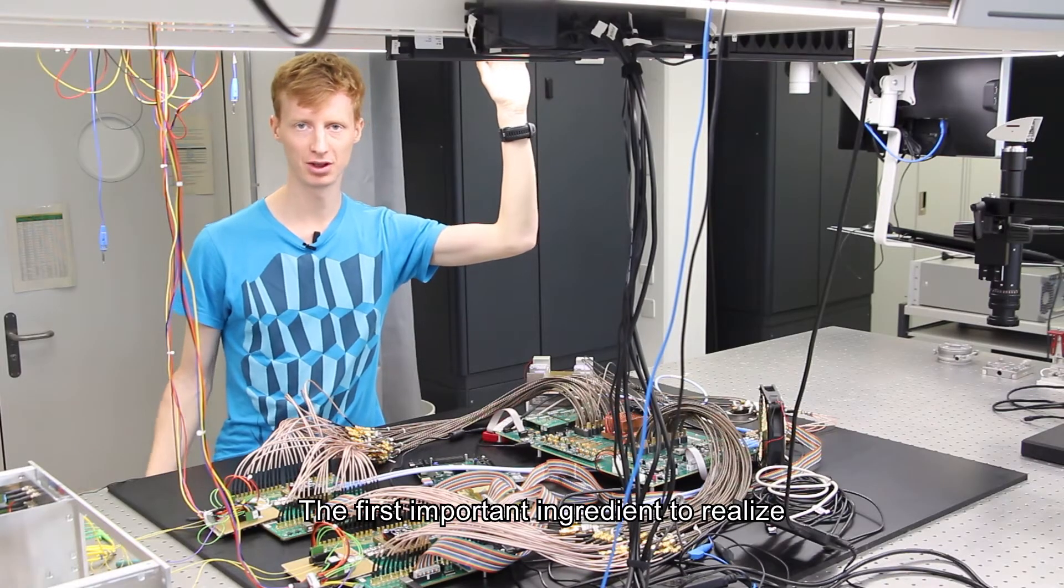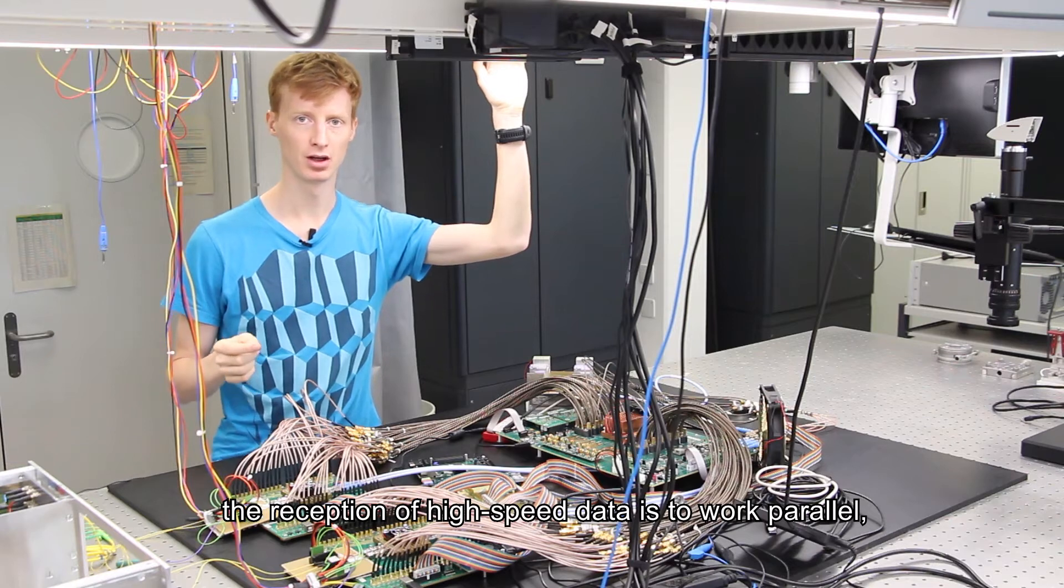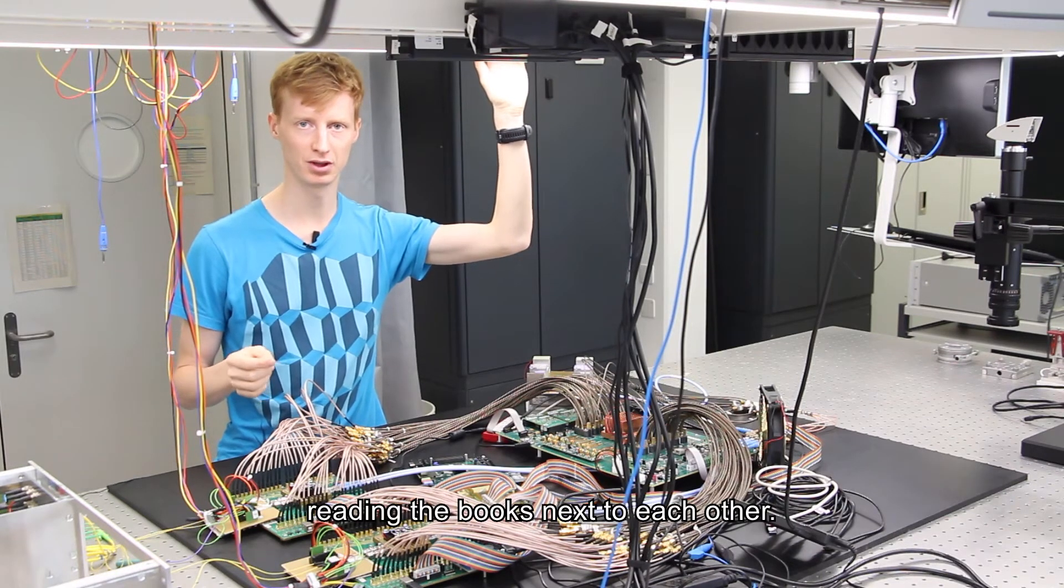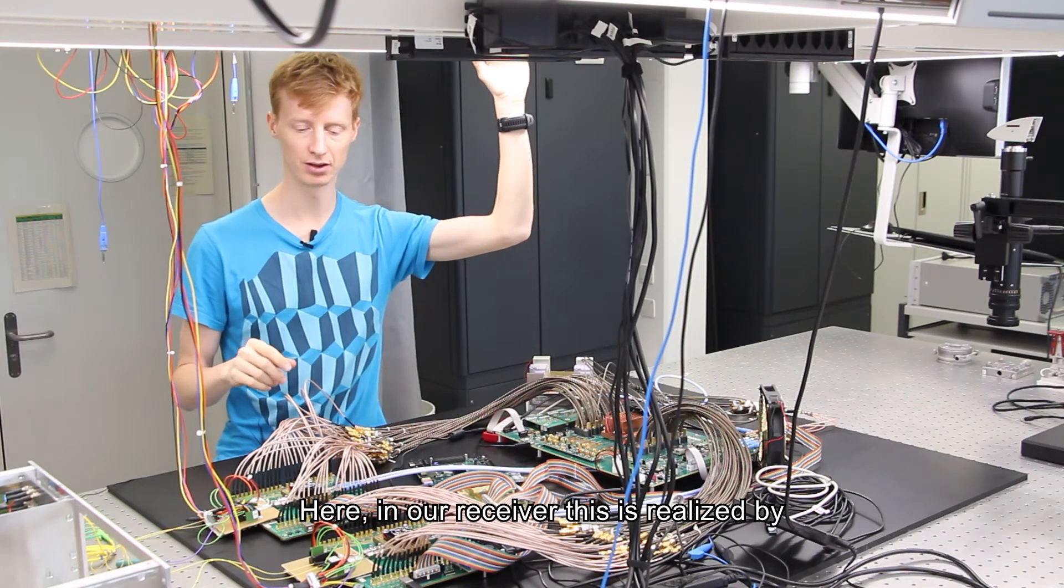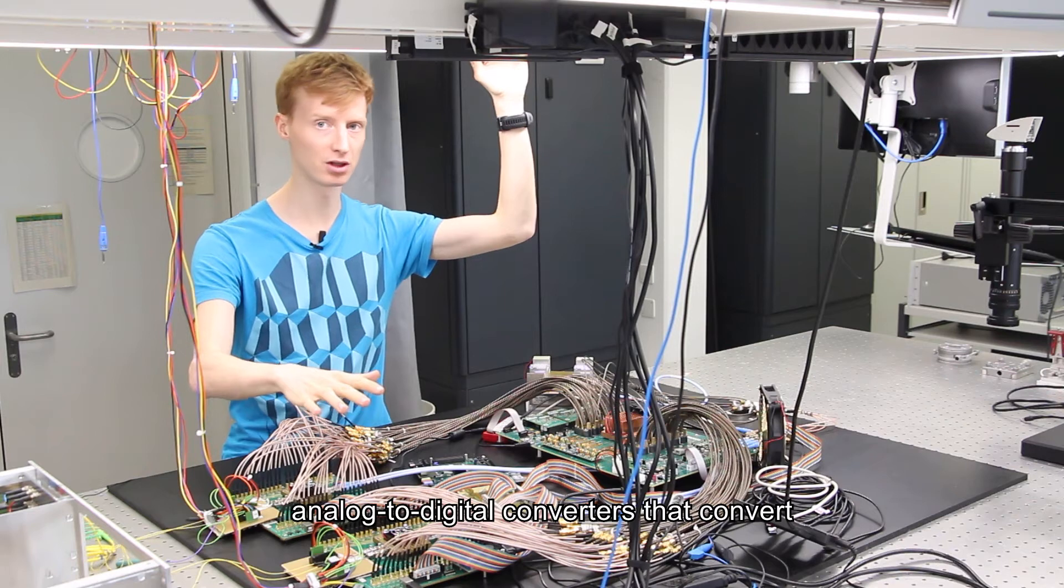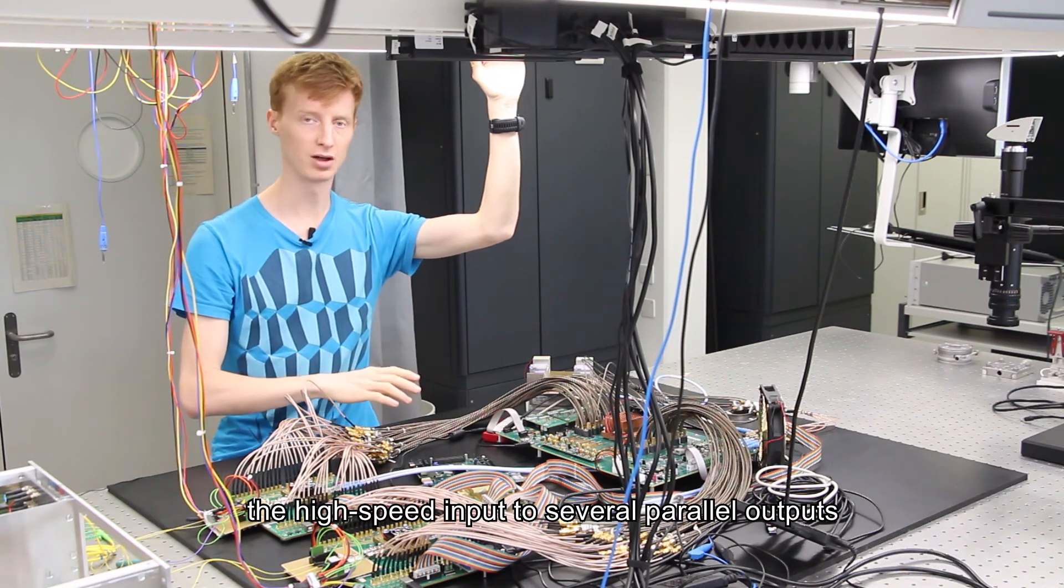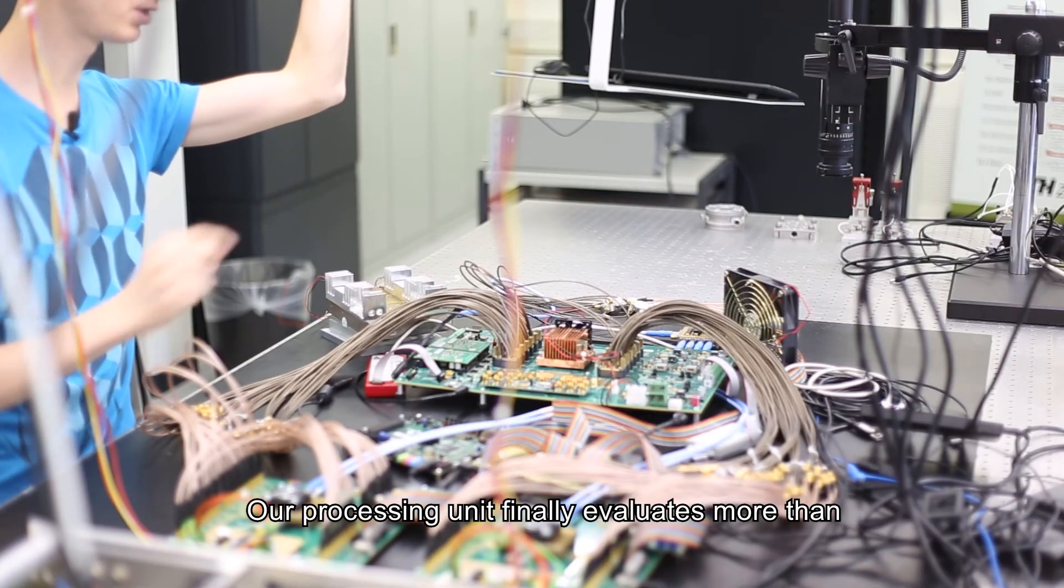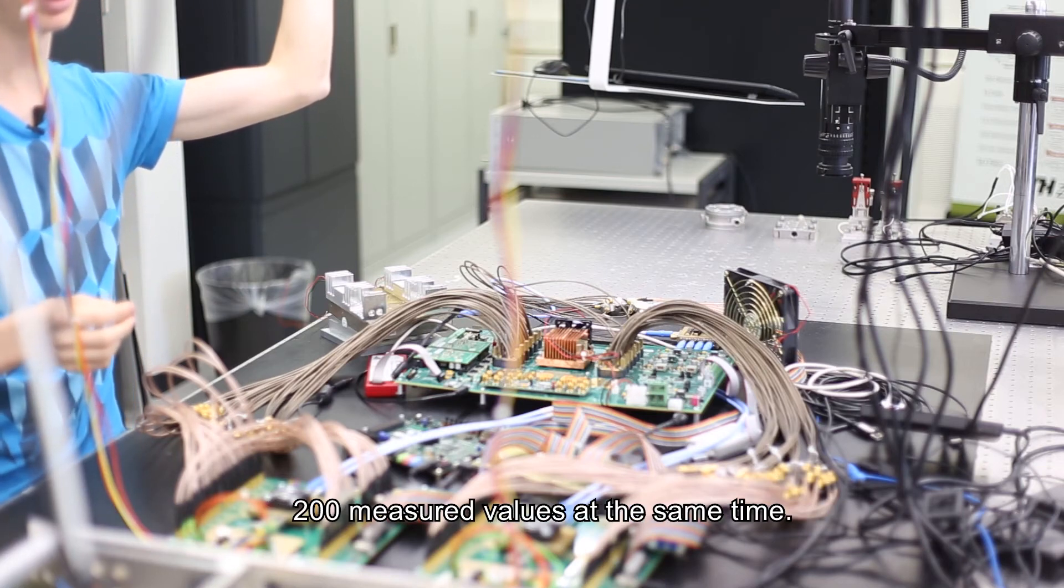The first important ingredient to realize the reception of high-speed data is to work in parallel. Speaking with the example from before, this would mean several persons reading the books next to each other. Here in our receiver, this is realized by analog-to-digital converters that convert the high-speed input to several parallel outputs that are connected to our processing unit. Our processing unit finally evaluates more than 200 measured values at the same time.